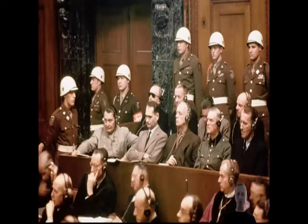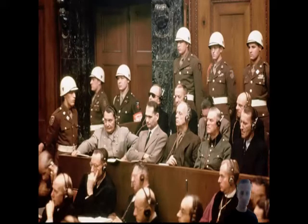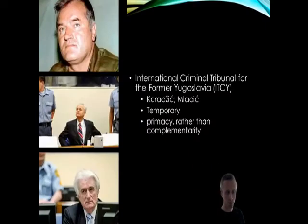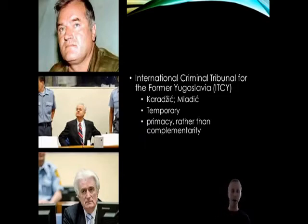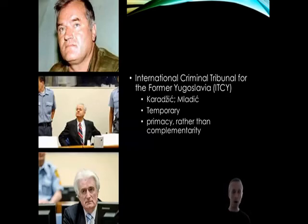Perhaps most famously, after World War II the Allies put on trial suspected war criminals in the Nuremberg trials. More recent is the International Criminal Tribunal for the former Yugoslavia, the ICTY. Like the International Criminal Court, it was based in The Hague. It was established by the UN Security Council in 1993, and its role was to consider abuses during the breakup of Yugoslavia in the early 1990s. The charges included grave breaches of the Geneva Conventions, violations of the laws of war, genocide and crimes against humanity.